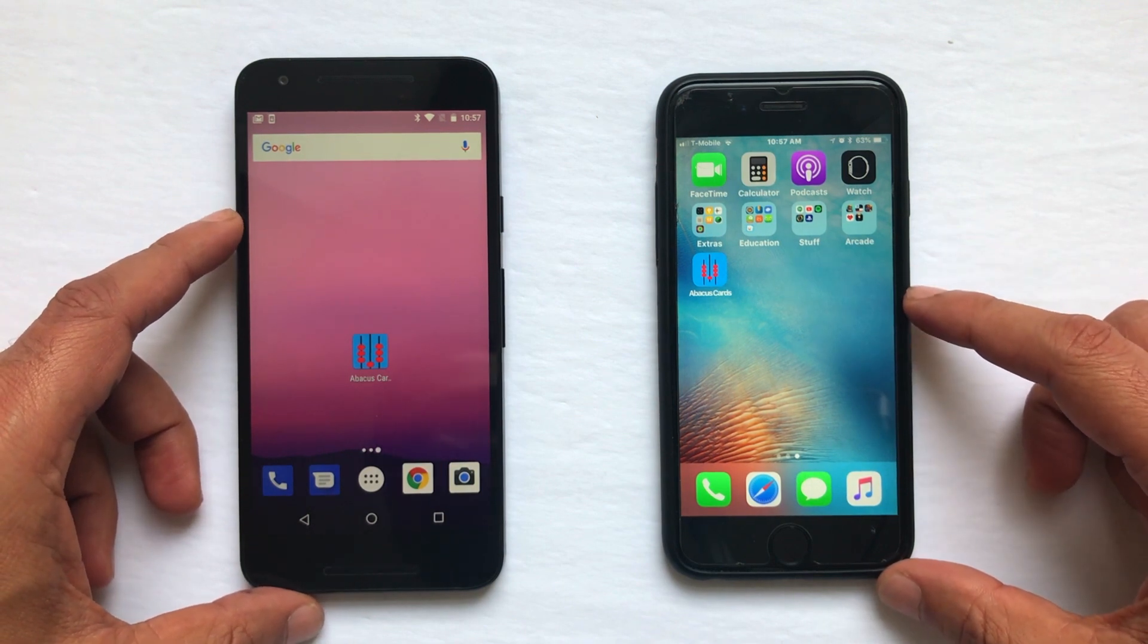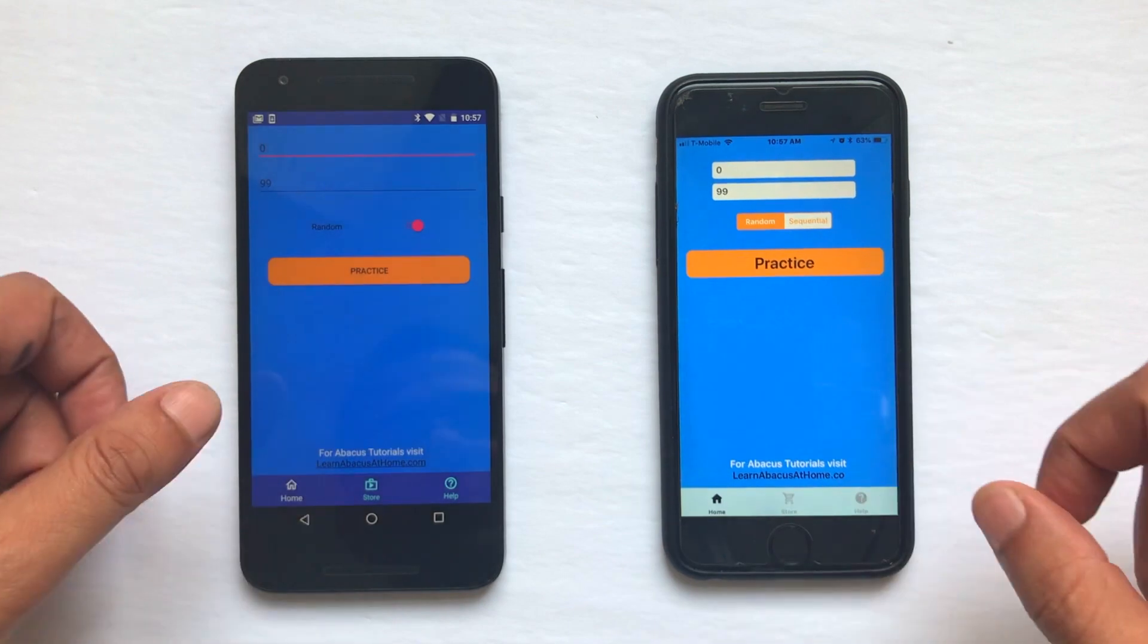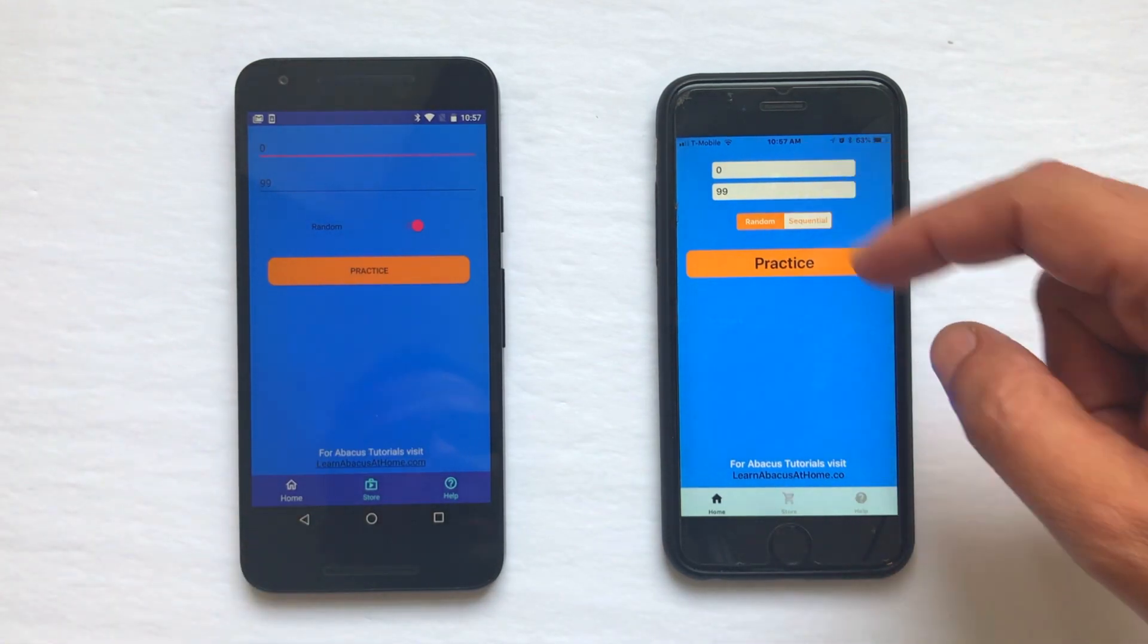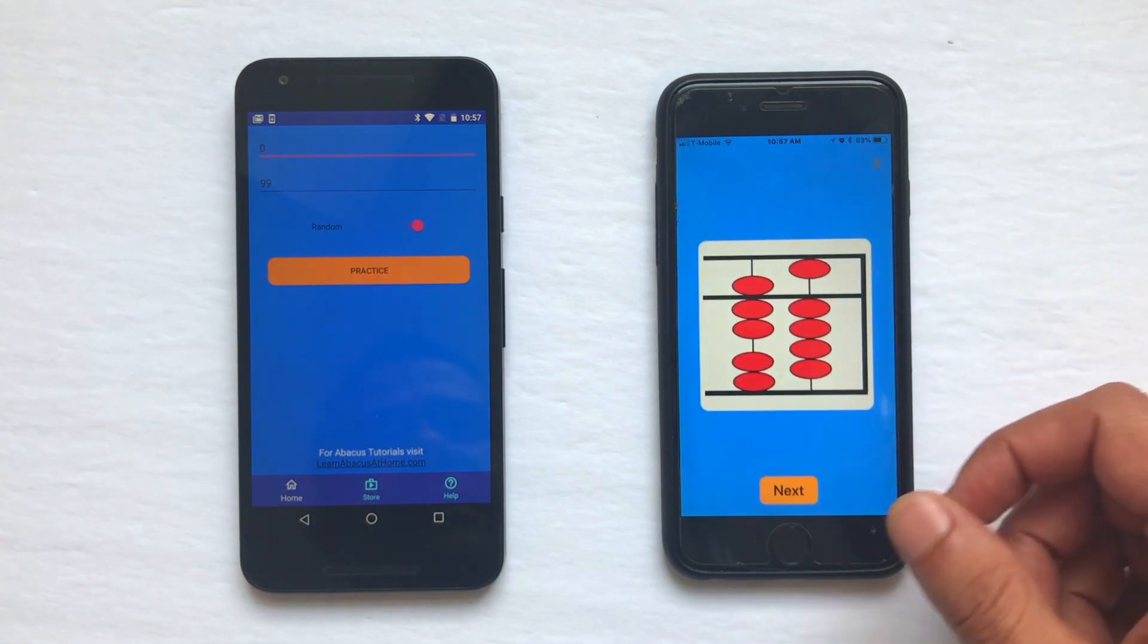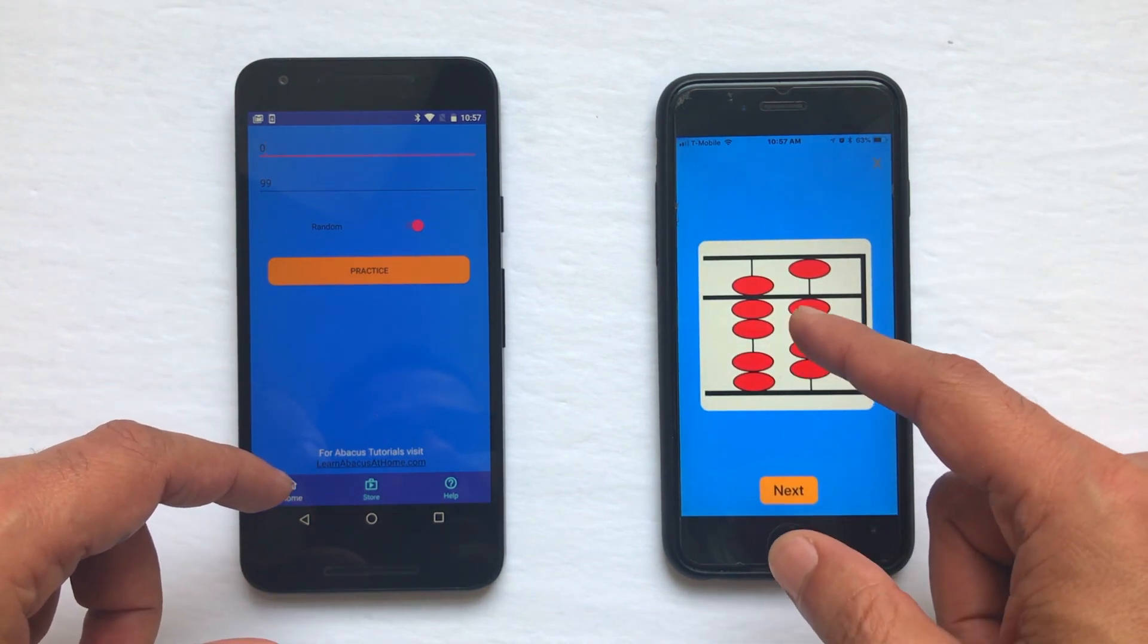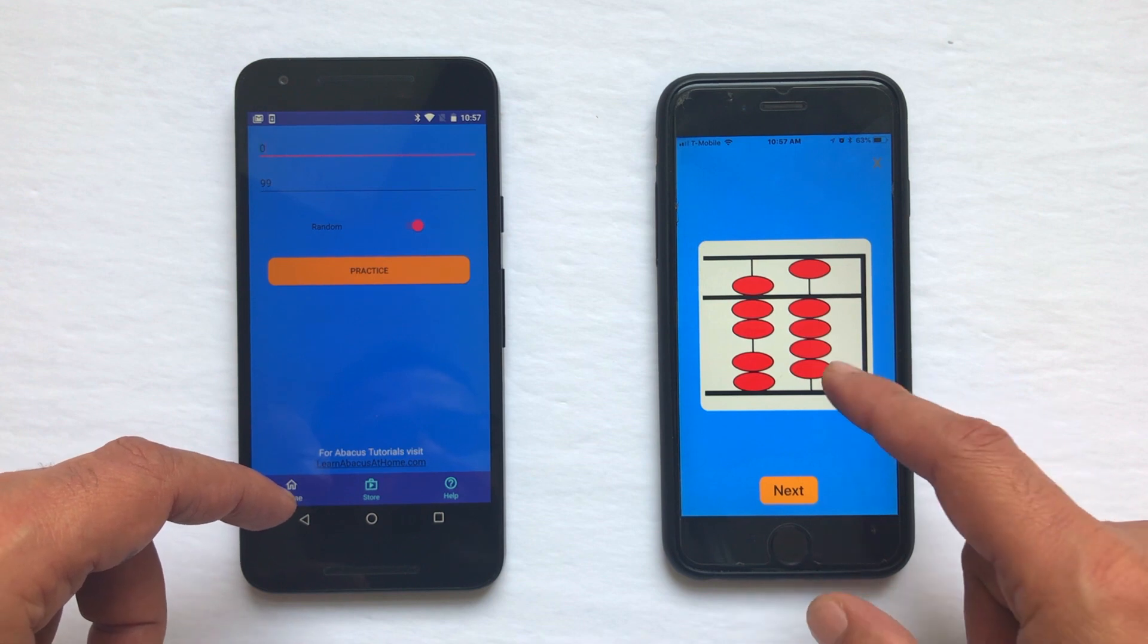Here's a quick look. You just enter the numbers that you want to practice with, whether random or sequential mode, and hit practice. Up comes the flashcard. This, for example, represents 74.